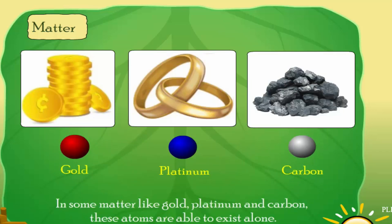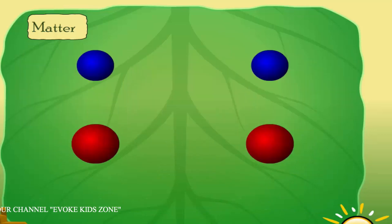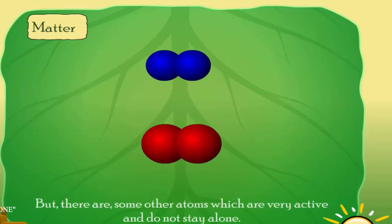In some matter like gold, platinum, and carbon, these atoms are able to exist alone. This means they need not combine with any other atom to exist alone. But there are some other atoms which are very active and do not stay alone.